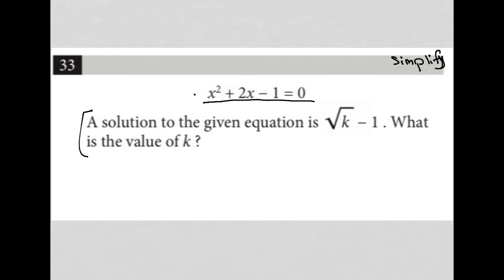We have x squared plus 2x minus 1 equals 0. The question says, a solution to the given equation is square root k minus 1. What is the value of k?